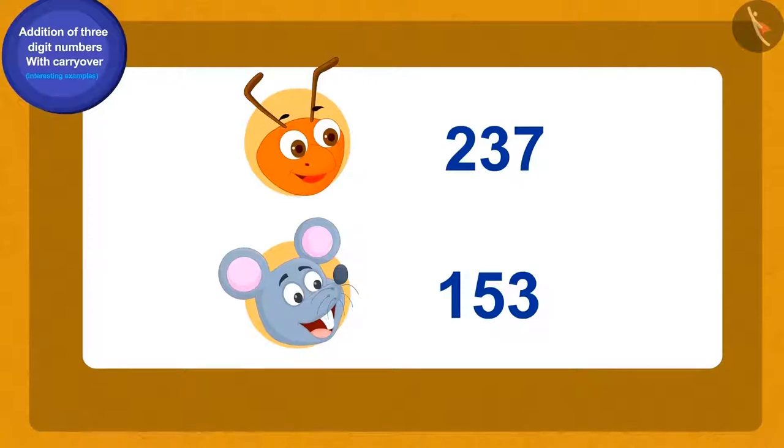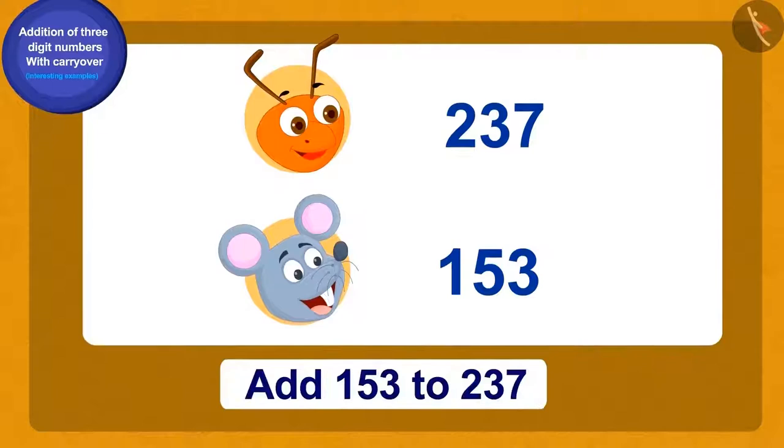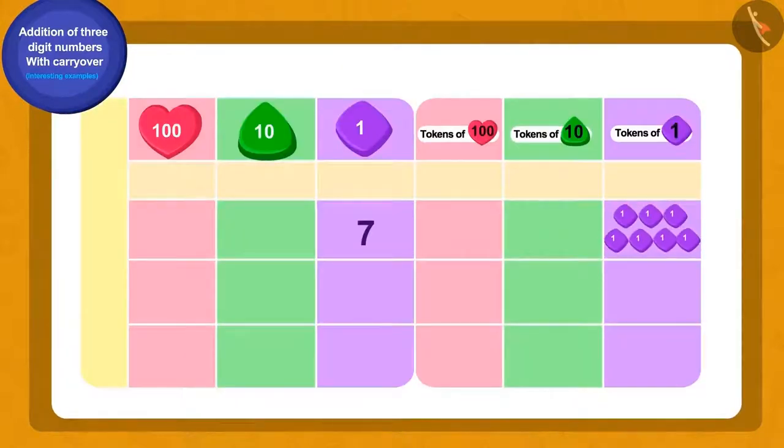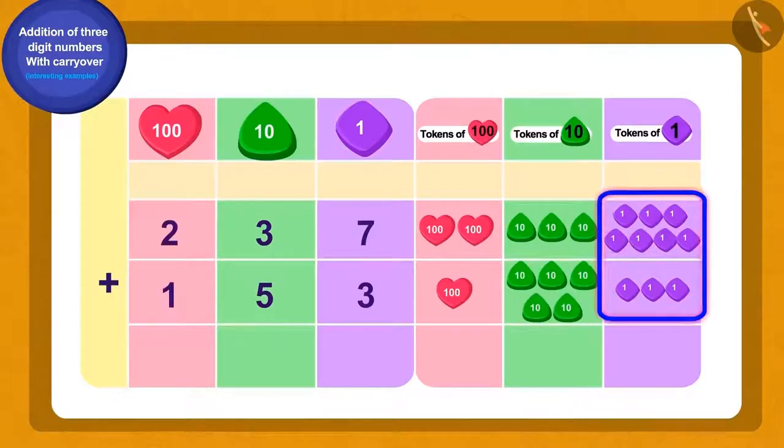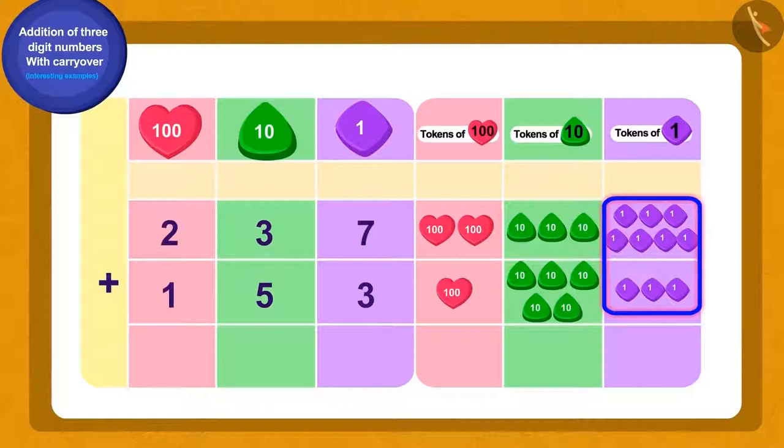To find the total number of animals of the flock, we will add 153 to 237. What shall we do first? 237 and 153 will be written using tokens. We have a total of 10 ones tokens.